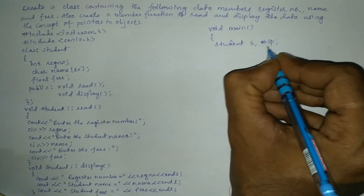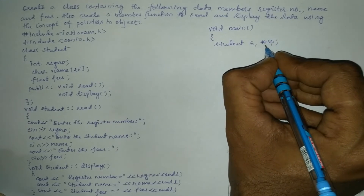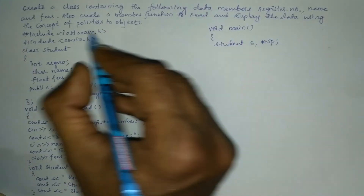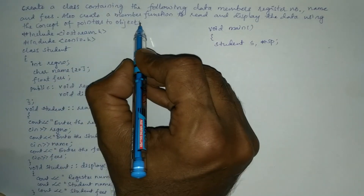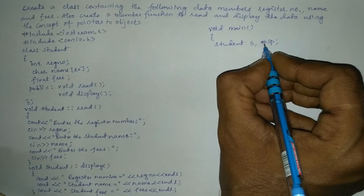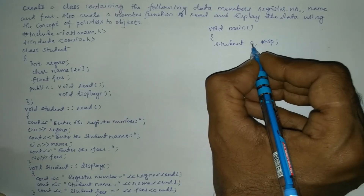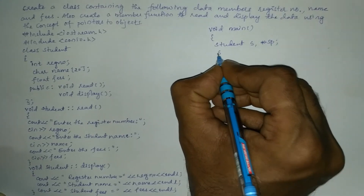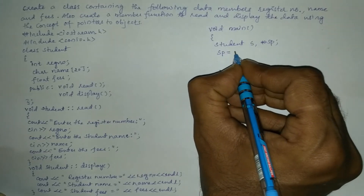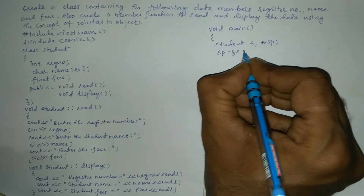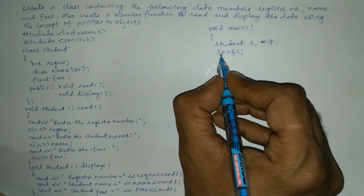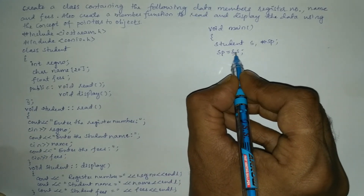We also declare a pointer object: student *sp. This is a pointer type object of the student class. A pointer is a special variable that holds the address of another variable, so we write sp = &s to make sp hold the address of s.